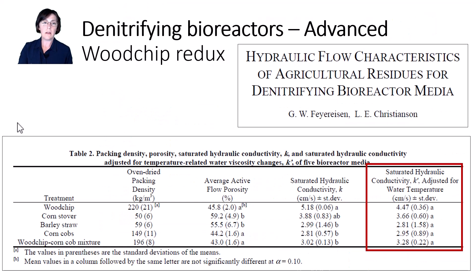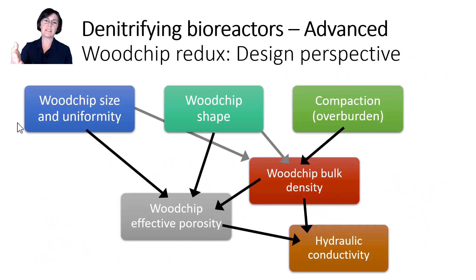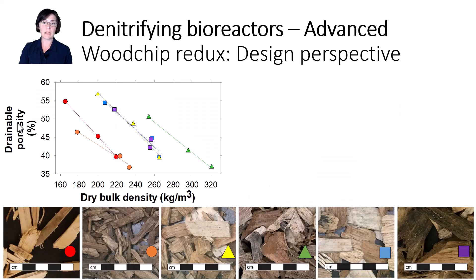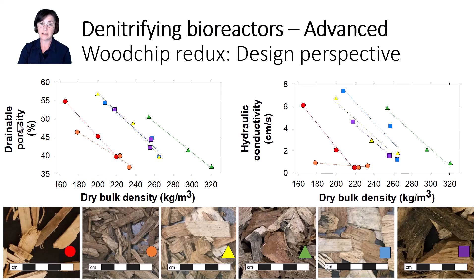I tend to like a slightly higher value for KSAT, and going back to this study from 2015, we see a woodchip KSAT of about 4.5 centimeters per second. This raises a good point about the variability of woodchip hydraulic properties. All these physical and hydraulic properties are linked. For example, we've measured woodchips at different compactions in the lab. Not surprisingly, as bulk density increases — as woodchips get packed tighter and tighter in a column — drainable porosity decreases, and KSAT also decreases.